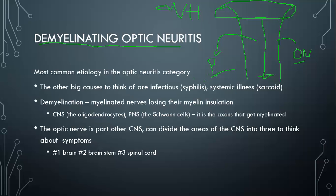Those are some examples of optic neuropathies. What we're going to be talking about is a specific type of optic neuritis: demyelinating optic neuritis. Other optic neuritis problems could include infectious optic neuritis, parainfectious optic neuritis, and systemic diseases can cause optic neuritis. The one to remember there is that sarcoid can cause an optic neuritis.